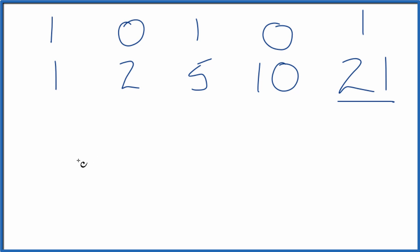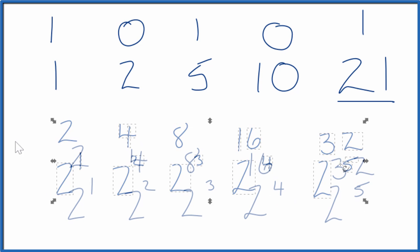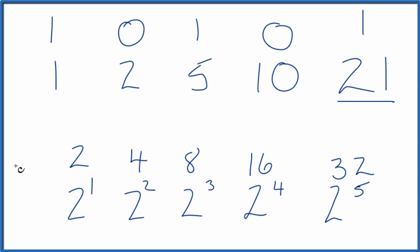First, we'll write the powers of 2. 2 to the first, 2 to the second. So that should be enough. Then we'll write the numbers in a base 10 system. 2 to the first is 2, 2 to the second is 4. Let's move this down some. So remember, we're trying to write 21 in binary.